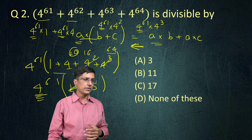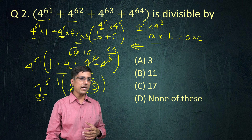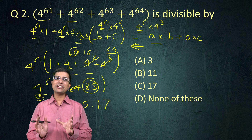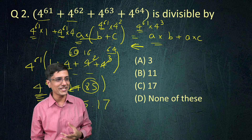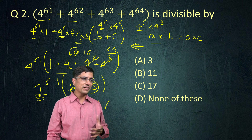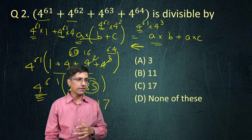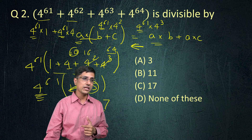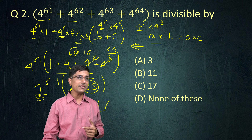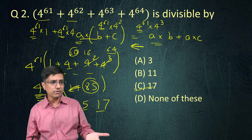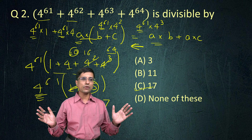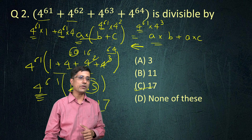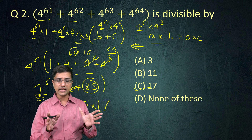Those are the numbers by which this particular number would be divisible. From the choices, we can say this particular number would be divisible by 17, also by 5, and by a number of multiples of 2. But from the choices, this number would definitely be divisible by 17 because 17 appears in the factors of this number.